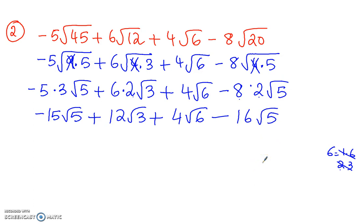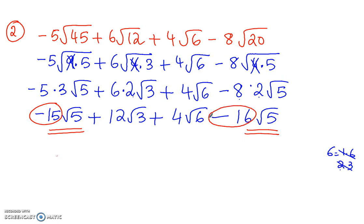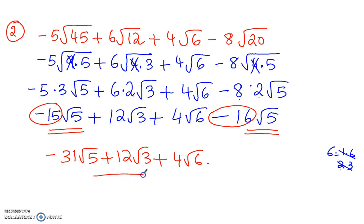Now we have simplified the radicals. Let's combine like radicals. There's a radical 5 here and a radical 5 here, so we combine the coefficients: negative 15 and negative 16 gives negative 31 radical 5. There is no other radical 3, so it's just plus 12 radical 3. What we're left with is 4 radical 6, and that is your answer.